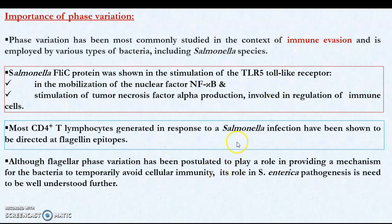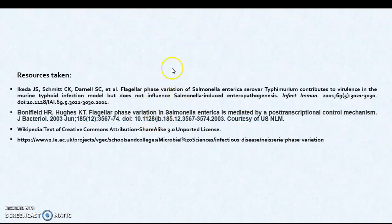Though there is evidence that immune evasion by phase variation is operated through flagellin proteins, its role in pathogenesis needs to be better understood. There are no studies where flagellin proteins themselves are the causative factors for Salmonella pathogenesis — other antigens are more responsible for pathogenesis. Thank you.